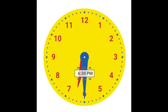Show students another model of a clock. Ask students to read the time shown. Ask students: if this is the time when some people eat dinner, would it be 6:30 in the morning or 6:30 in the evening? Tell students that to designate an afternoon or evening time, PM is used. This time is read as 6:30 PM. The abbreviation PM means after noon or midday. When reading time from noon to midnight, PM is used.